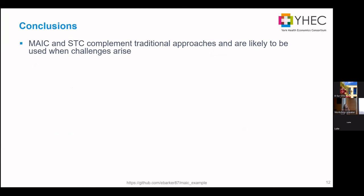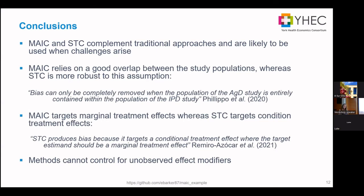Some concluding remarks. These tools complement traditional approaches. When we don't have common comparators or we have very different trials, they're options we can use, but they come with their own strengths and limitations. We need to think about whether the data we have makes these methods robust enough to justify the results. The main issue with MAIC is that it relies on good overlap between the IPD and aggregate study populations — bias can only be completely removed when the aggregate study population is entirely contained within the IPD.